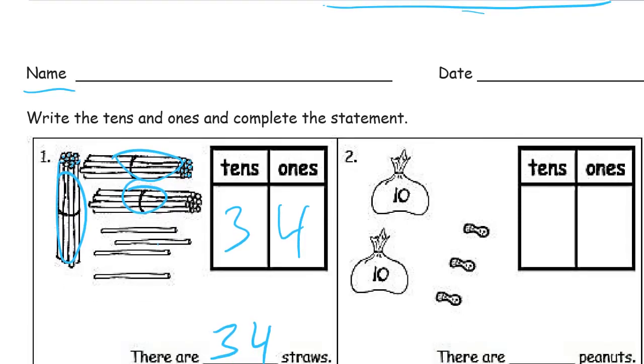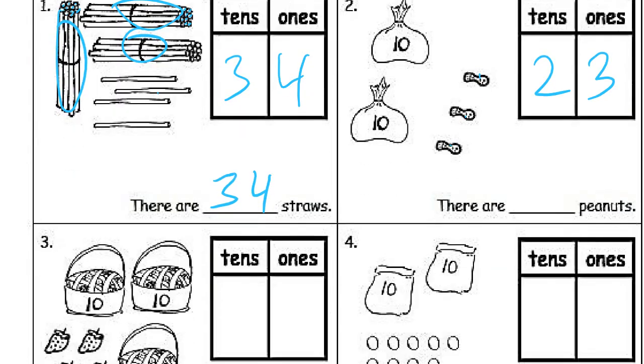And same thing here. Ten, twenty. We're not going to write the number twenty here where it says tens in the box because there's two groups of ten, not twenty groups of ten. And there's one, two, three peanuts, or three ones. There are twenty-three peanuts.